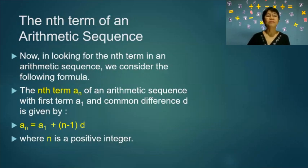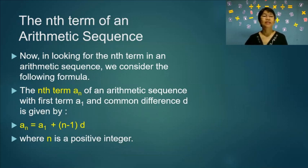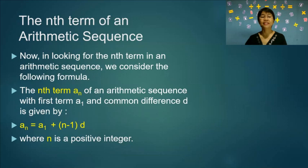The nth term of an arithmetic sequence. To find the nth term, we use the formula: a sub n equals a₁ plus (n minus 1) times d, where a₁ is the first term, d is the common difference, and n is a positive integer.